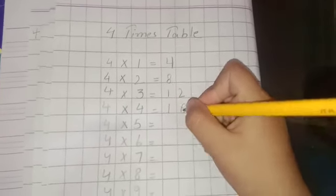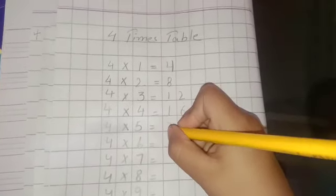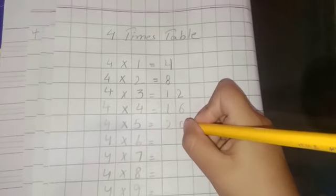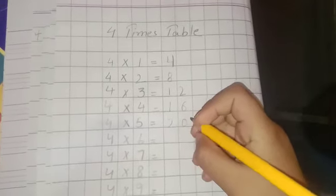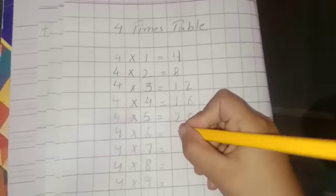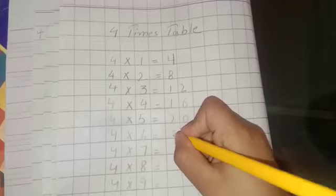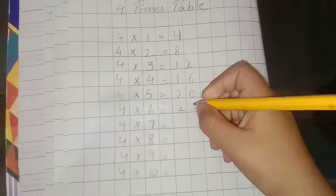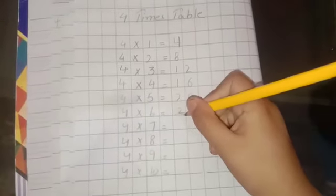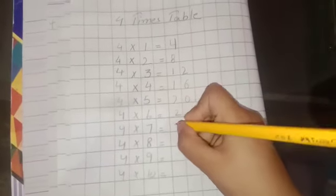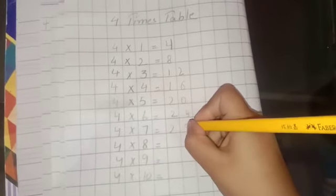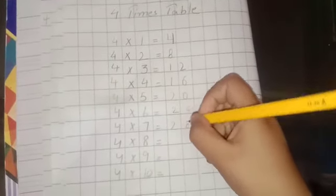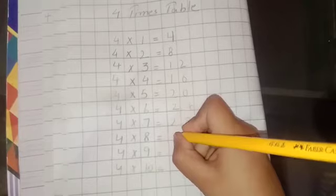4 5s are 20, 4 6s are 24, 4 7s are 28, 4 8s are 32.